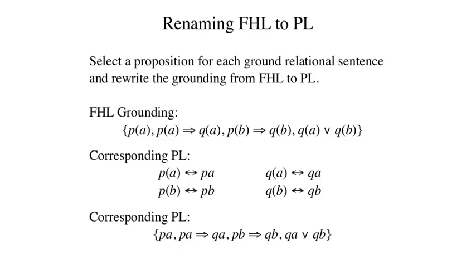Once we have a grounding gamma, we replace each ground-relational sentence in gamma by a propositional constant. The resulting sentences are all in propositional logic.